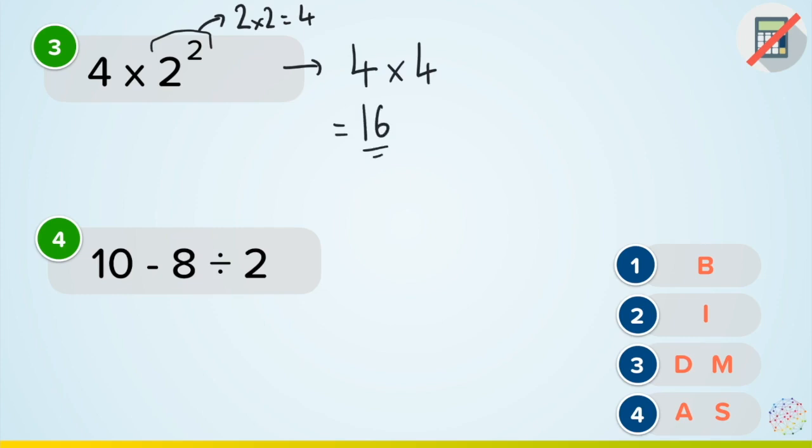Okay, my fourth example here. So I've got a subtraction and a division. Which one goes first? You don't do 10 minus 8 divided by 2. That's wrong. You've got to use your BIDMAS. Division's there. Division's here before the subtraction. So do my division. Eight divided by two is four. Then I can rewrite my question. 10 minus the four, well, that's six. Question answered.